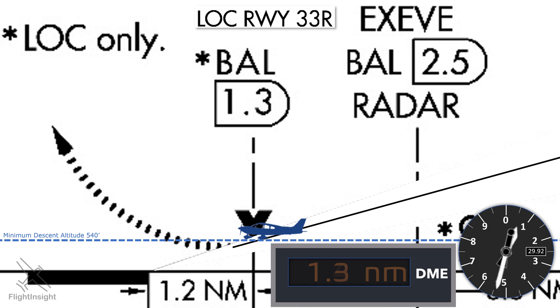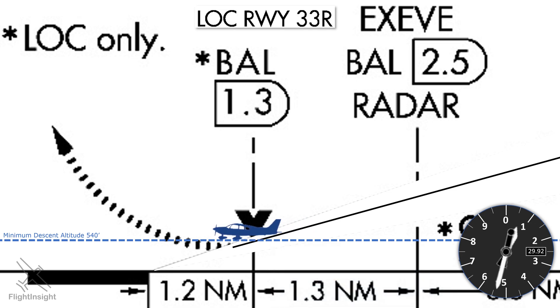However, we still need to maintain the minimum altitude of 540 feet all the way, and delay actually executing the missed approach until we get to the missed approach point, at which point we can start our climb out.